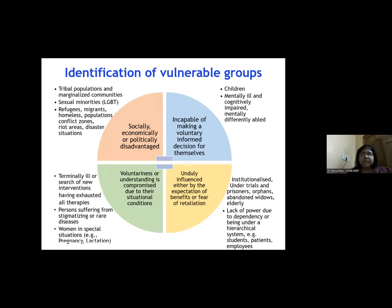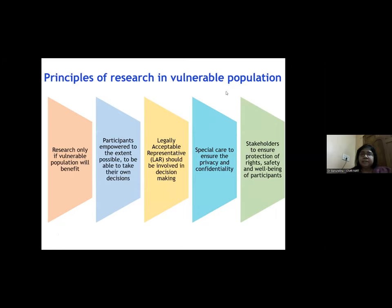By nature of their vulnerability, such populations should not be unnecessarily involved in research to benefit others. Research involving vulnerable populations should only proceed if the vulnerable population will benefit. Participants should be empowered as much as possible, with the help of a legally authorized or acceptable representative in the decision-making process. Special care must be taken to ensure privacy, confidentiality, and the safety and well-being of participants.